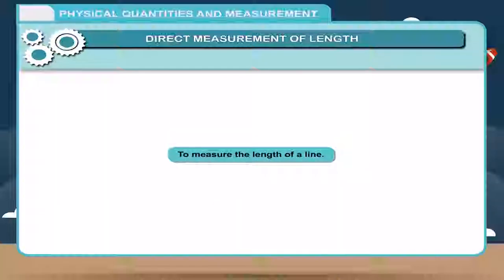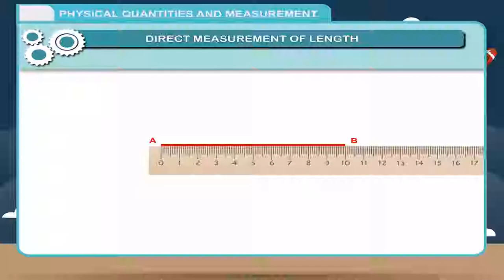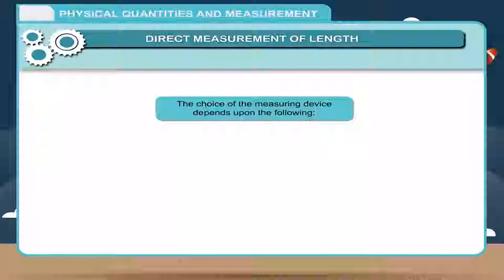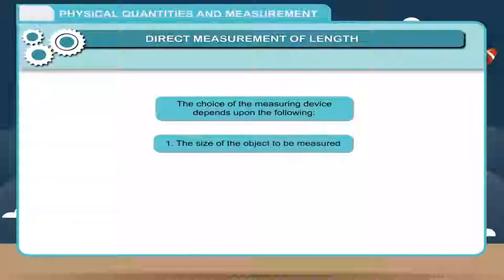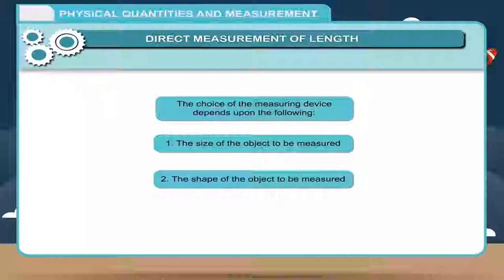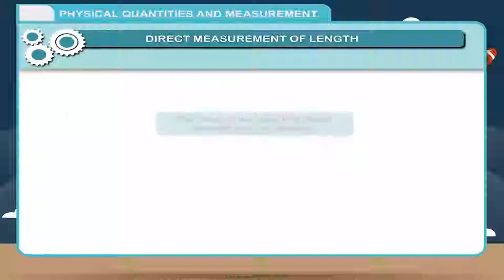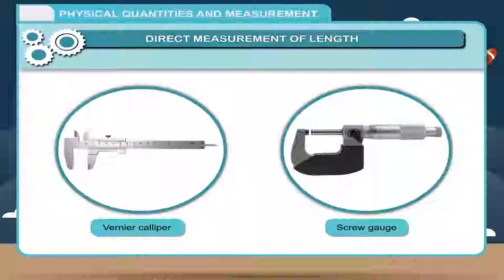Activity: To measure the length of a line, place a scale along line AB such that zero on the scale coincides with point A. Note down the reading on the scale which coincides with point B — this reading gives the length of line AB. To make accurate measurement, we require a proper measuring device. The choice of measuring device depends on: 1. The size of the object to be measured, 2. The shape of the object to be measured, and 3. The degree of accuracy required. Vernier calipers and screw gauges are instruments used to measure very small lengths accurately, such as the diameter of an electric wire.